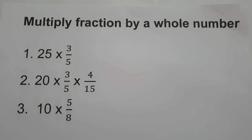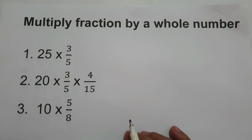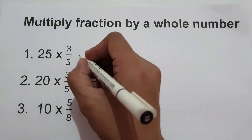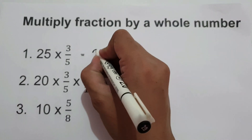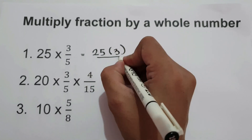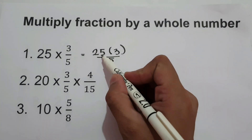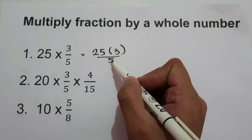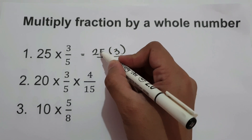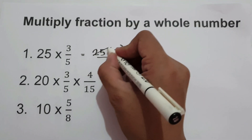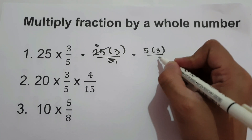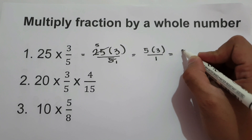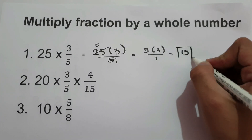Now we are going to multiply a fraction by a whole number. The rule: we multiply the whole number by the numerator of the fraction and then copy the denominator. For example, 25 times 3 over 5. We can simplify 25 and 5 because they are divisible by 5 — 25 becomes 5 and 5 becomes 1. So we have 5 times 3 over 1, which is 15. So 15 is our final answer.